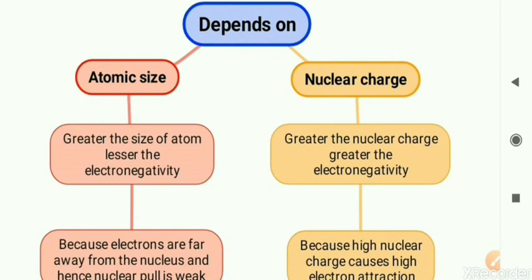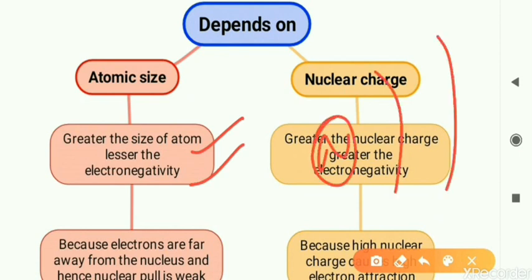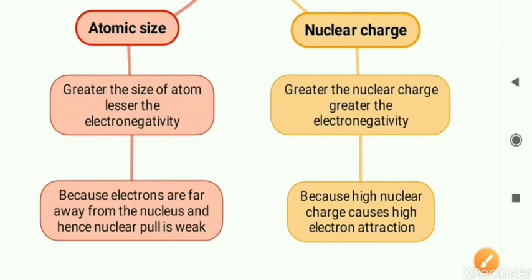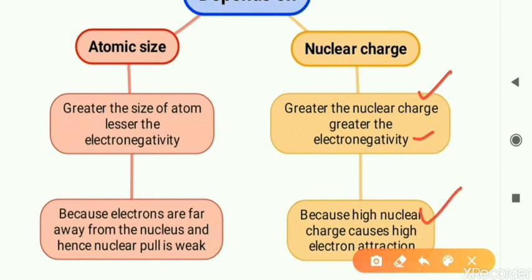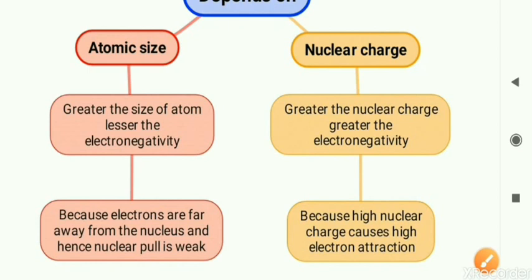For atomic size: if the size of the atom is bigger, the nucleus is in the center but far away from the electrons, and hence the attraction will be less. So greater atomic radius means less electronegativity; smaller atoms have higher electronegativity. For nuclear charge: greater nuclear charge means greater electronegativity. In other words, if atomic number is high, electronegativity is more, because a stronger nucleus leads to higher electron attraction — more electrons can be attracted towards the center of the nucleus.